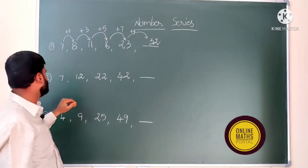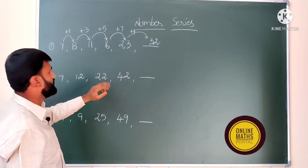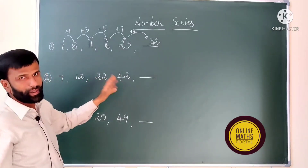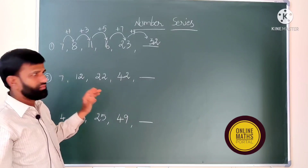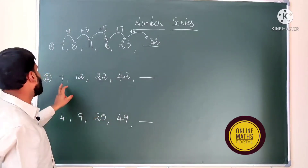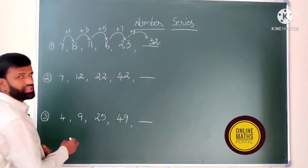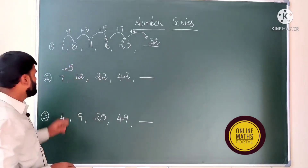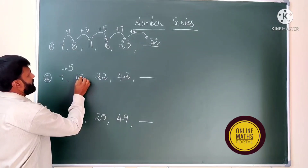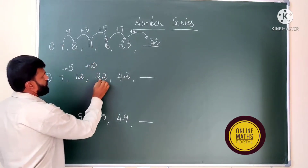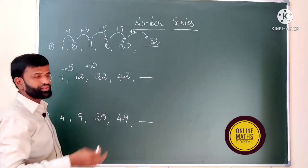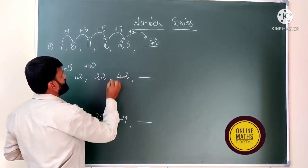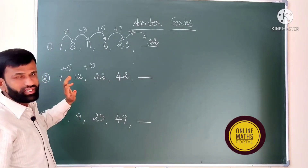Second question: 7, 12, 22, 42 — find the next number. It is also in ascending order, so first we will check addition; if we don't get the answer, then we go for multiplication. So: 7 to 12 is plus 5, 12 to 22 is plus 10, 22 to 42 — if we try plus 15, we get 37, but 42 is there, so that's a mistake.